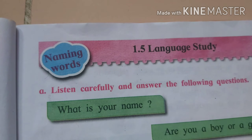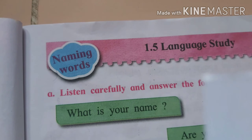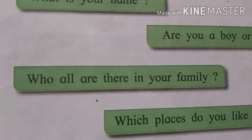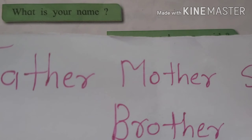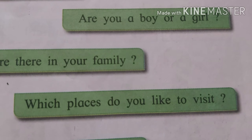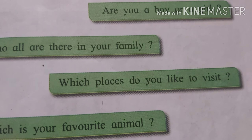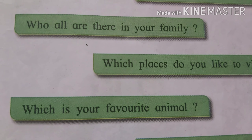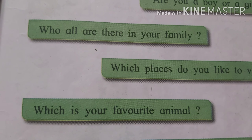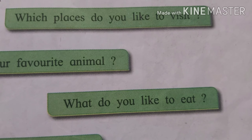What is your name? Raj. Are you a boy or a girl? Boy. Who all are there in your family? Father, mother, sister, and brother. Which places do you like to visit? Garden, Zoo. Which is your favorite animal? Dog. What do you like to eat? Apple.